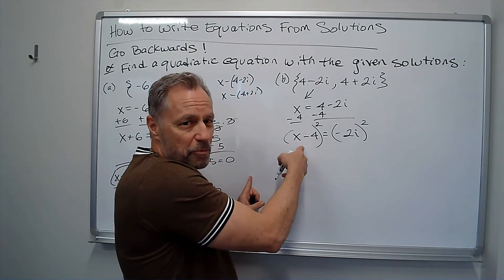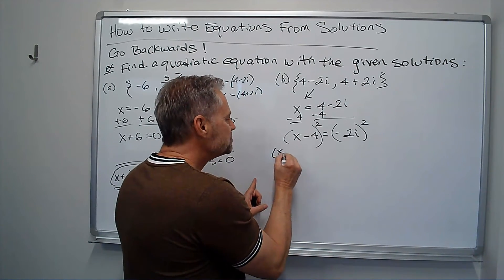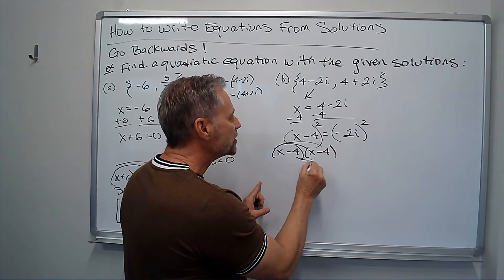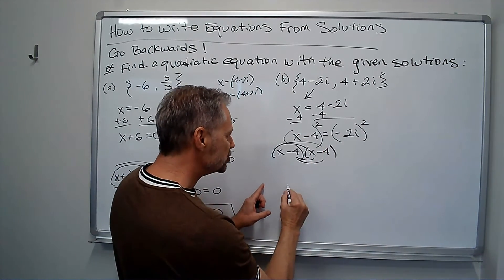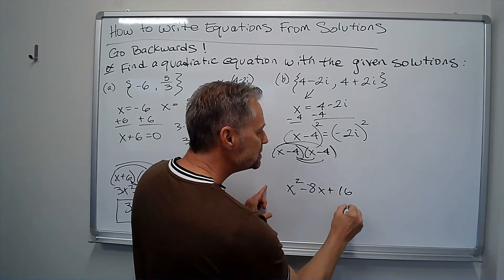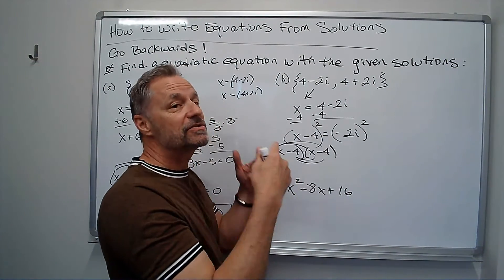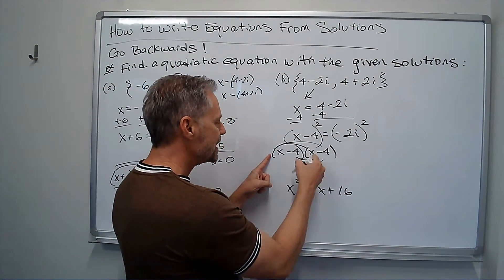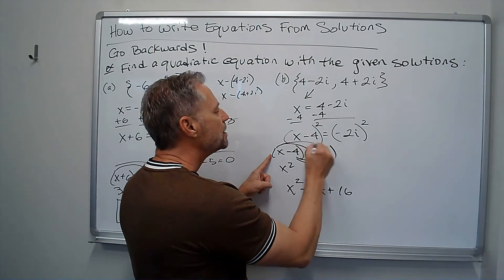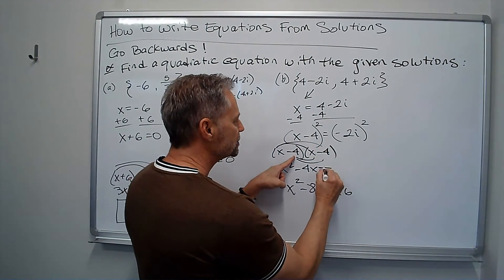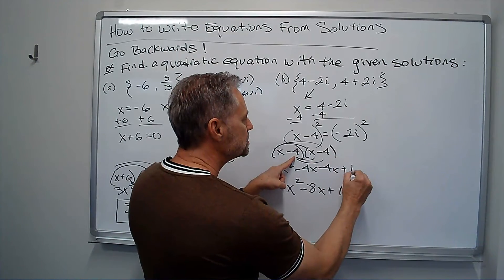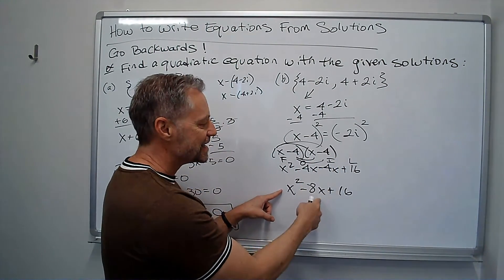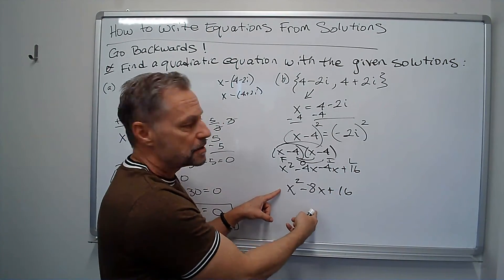So I'm going to multiply that out. Now remember, that's x minus four times x minus four. If you want to foil that out, we'll do it real quickly. This is just x squared minus eight x plus 16. I'm going to get x times x is x squared minus four x minus four x plus 16. And so the minus four x minus four x is the minus eight x.